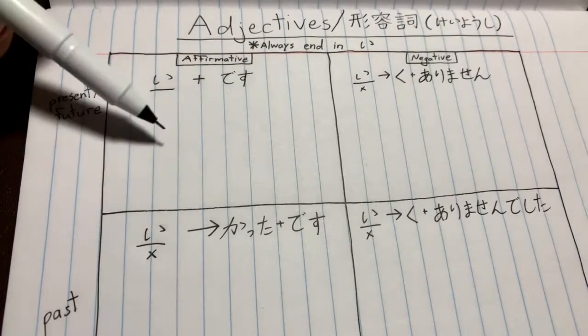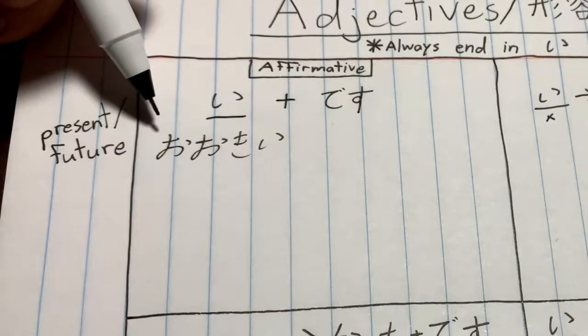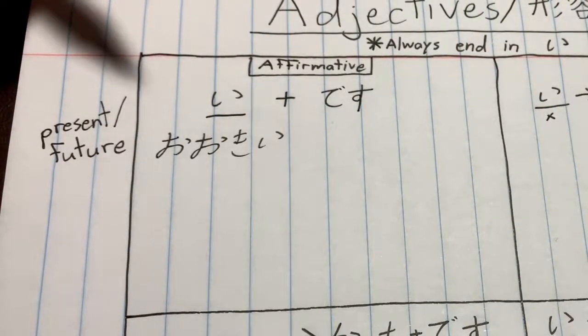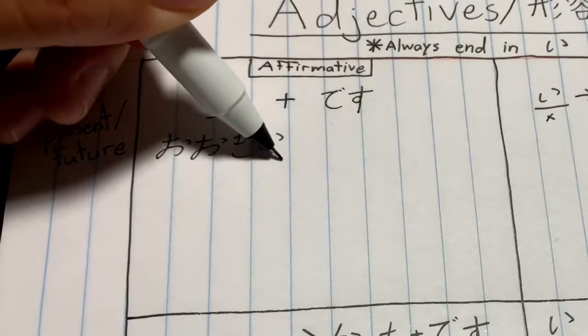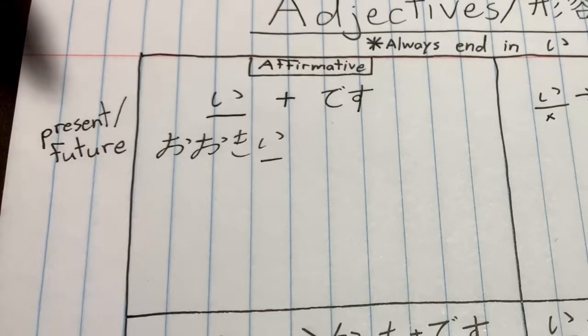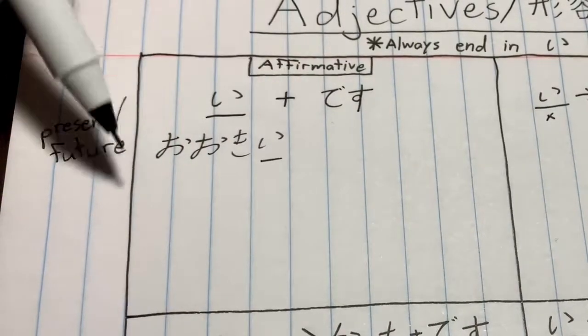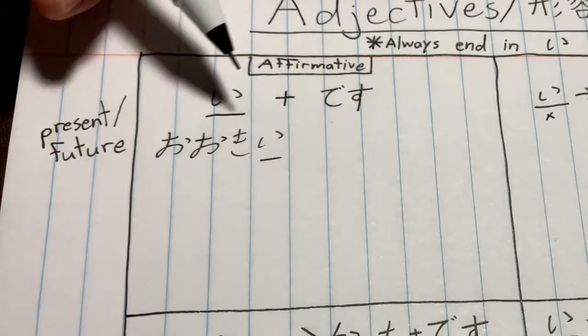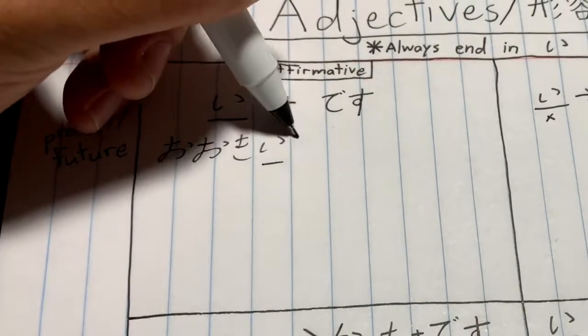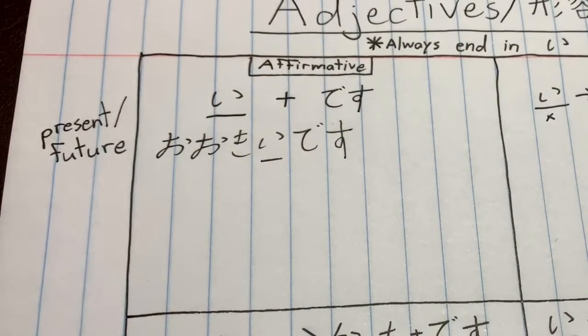Starting at this upper left box, we have our affirmative. Our first adjective is オキイ (ookii), which means big. As I mentioned earlier, all adjectives end in 'i', so you see the last character of this word is 'i' indicating it is an adjective. To complete the phrase for this box, we add です (desu), so オキイです (ookii desu) means 'it is big' or 'it's big.'